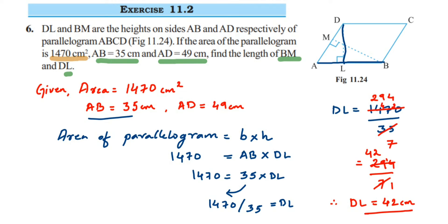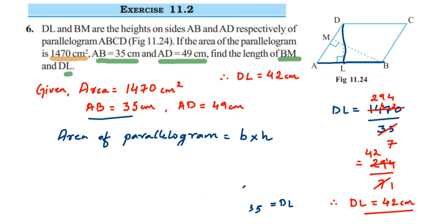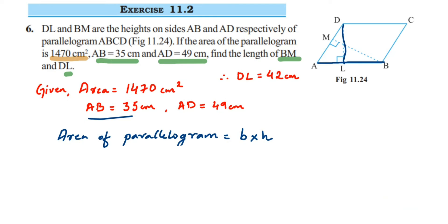Now we follow the same process to find the other height, BM. We keep the formula and just change the values. In the second case, I'm taking AD as the base, so the corresponding height will be BM. Area = base × height, where base = AD and height = BM.